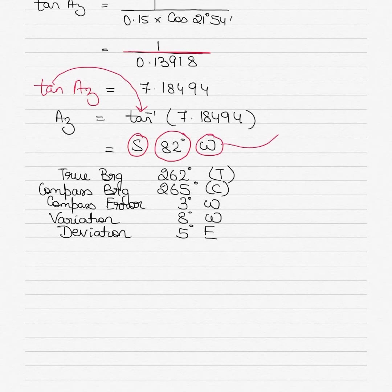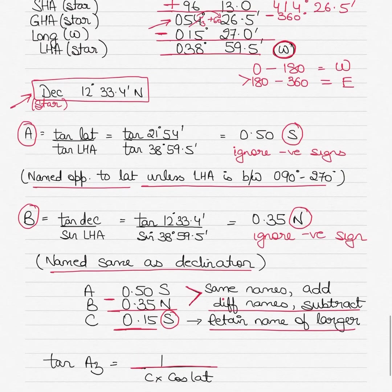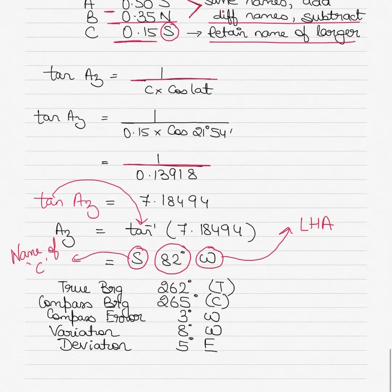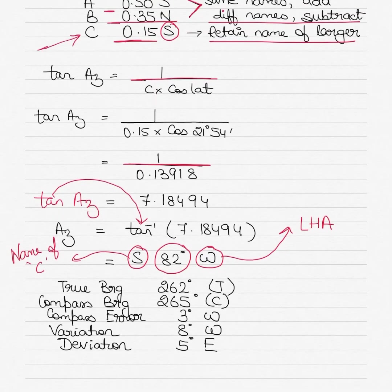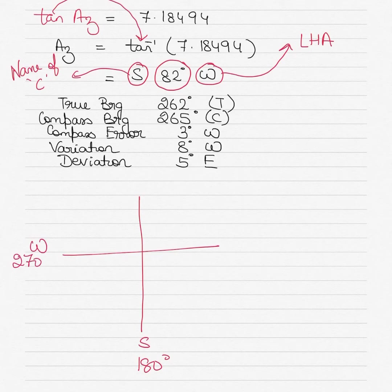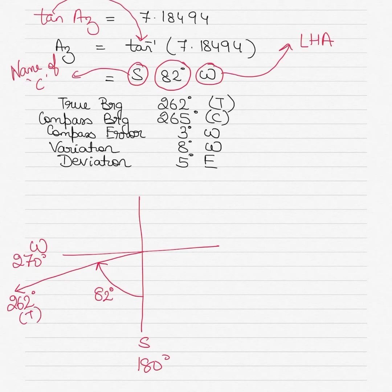Name the azimuth: the West comes from the LHA name (we named LHA West because it was between 0° and 180°), and the South comes from the name of C (which was South). So the azimuth is S82°W. South 82° West means 180° plus 82° = 262°. The true bearing is therefore 262°.